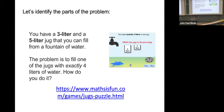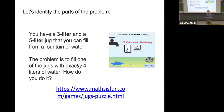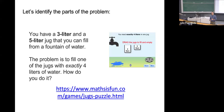What are the givens? A source of water — without that, the problem is impossible. Two containers with known volumes. A drain, which implies an implicit given: you can pour water out as well as fill. Another implicit given not explicitly stated is that you can empty the jugs. These implicit givens may turn out to be critical to the solution.